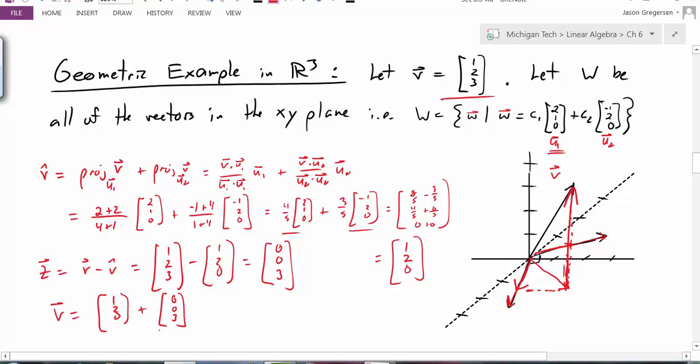And these two vectors are perpendicular. One of these vectors is in w, one of them is in the xy plane, and the other one is in w perp. So now we've extended our idea of projecting onto a subspace into R3. And of course, we can extend this to higher dimensions as well. We would simply continue to add on other basis vectors for higher dimensions of Rn. All right, so that concludes this video. Thank you very much.